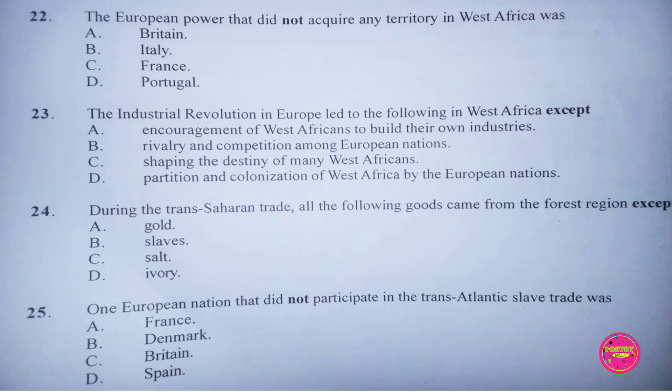Question 24. During the Trans-Saharan trade, all the following goods came from the forest region except: A. Gold, B. Slaves, C. Salt, D. Ivory. The correct answer to this question is C. Salt.